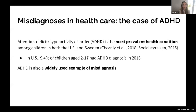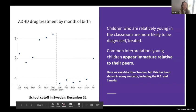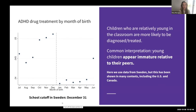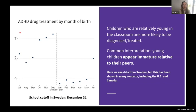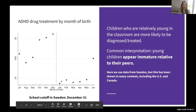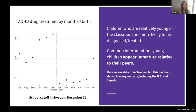This graph illustrates why. It shows the share of children treated for ADHD in Sweden by the child's own month of birth. The vertical line in the middle marks the school cutoff. Children born in December are youngest in their classrooms, and among them more than five percent are treated for ADHD. Children born just a month later in January are oldest in their classrooms, and among them the share treated is more than 20 percent lower — less than four percent.